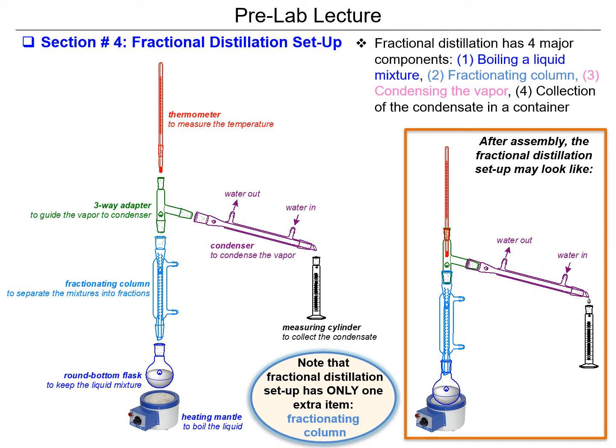The second distillation technique is fractional distillation. It is the same as simple distillation in most parts — the only difference is that fractional distillation has an additional apparatus called a fractionating column, which you can see in blue next to the round bottom flask. Fractional distillation therefore has four major components. When assembled, the fractionating column connects to the round bottom flask first, and the others are connected in the same way as simple distillation.